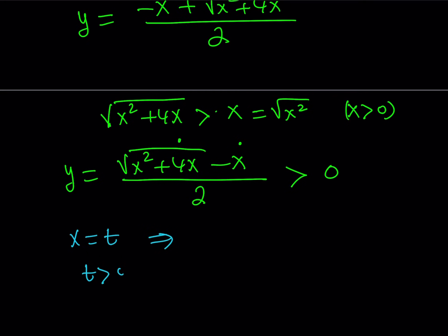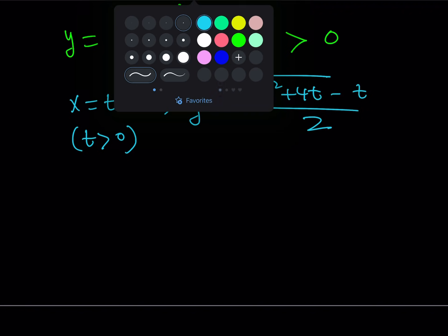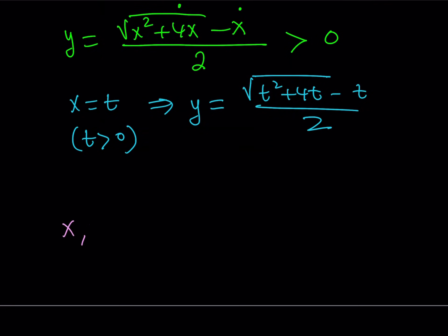Of course, in this case, t needs to be positive. That's the requirement. And when t is positive, x is going to be positive, and therefore, y is going to be positive. But y can be written now as the square root of t squared plus 4t minus t divided by 2. And that means I can write my solutions now as an ordered pair. Let's go ahead and write the answer as an ordered pair. And let's see what that looks like. So x comma y can be written as t comma square root of t squared plus 4t minus t divided by 2.